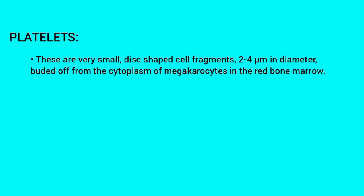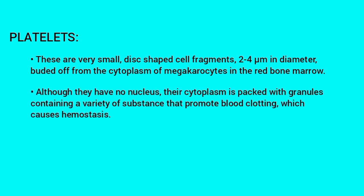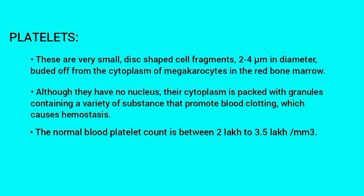These are very small, disc-shaped cell fragments, 2-4 micrometers in diameter, budded off from the cytoplasm of megakaryocytes in the red bone marrow. Although they have no nucleus, their cytoplasm is packed with granules containing a variety of substances that promote blood clotting, which causes hemostasis. The normal blood platelet count is between 2 lakh to 3.5 lakh per cubic millimeter.